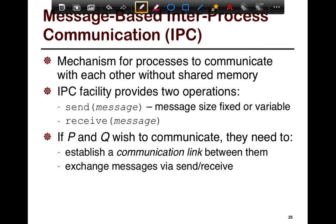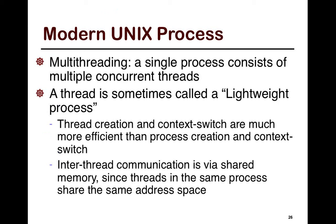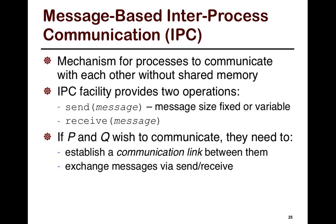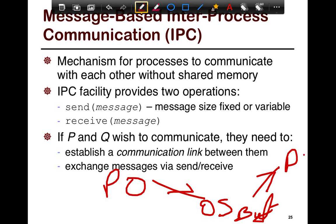With message-based inter-process communication, the two processes do not assume shared memory and they communicate using network IPCs — inter-process communication calls — sending and receiving messages. If two processes wish to communicate, they need to establish a communication link, which involves copying data and telling the OS you're going to set this up, so there's an initial setup cost. Typically it's just a software buffer that sits in the operating system. You then exchange messages via send and receive. There would be a copy from P0 to the OS buffer, and then another copy from the OS buffer to P1 — two sets of copies — and that's why it's expensive.